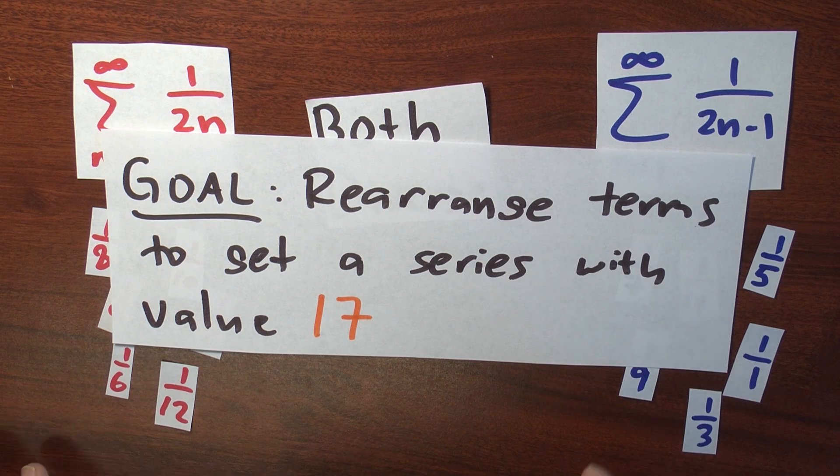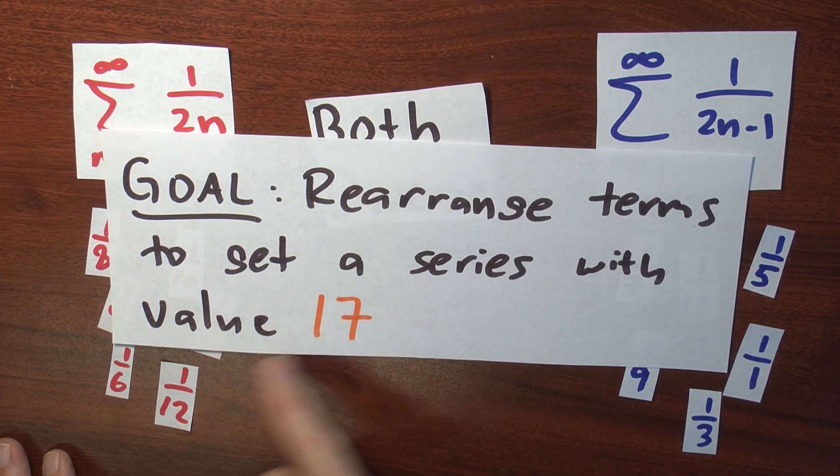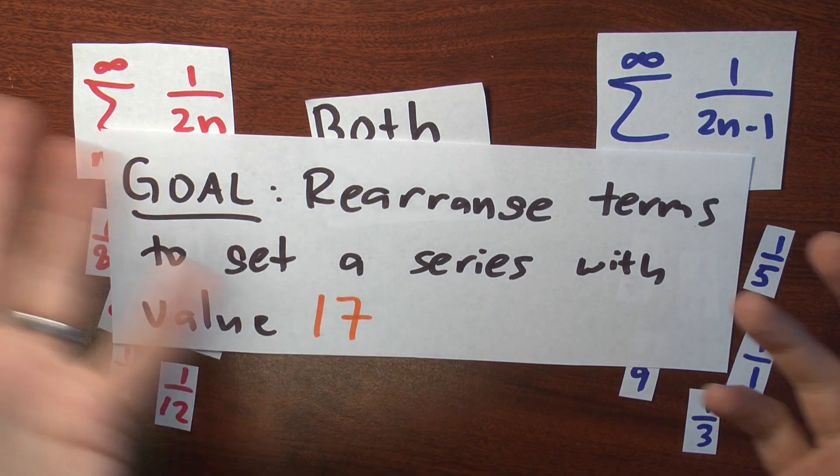I'm going to rearrange the terms of the alternating harmonic series to get a new series. Same terms, just different order. But now my new series, when I evaluate it, will have value 17. I'll keep picking up positive terms until I exceed 17.